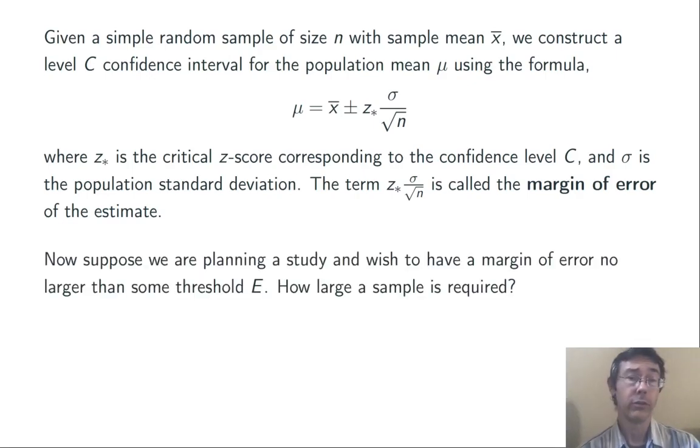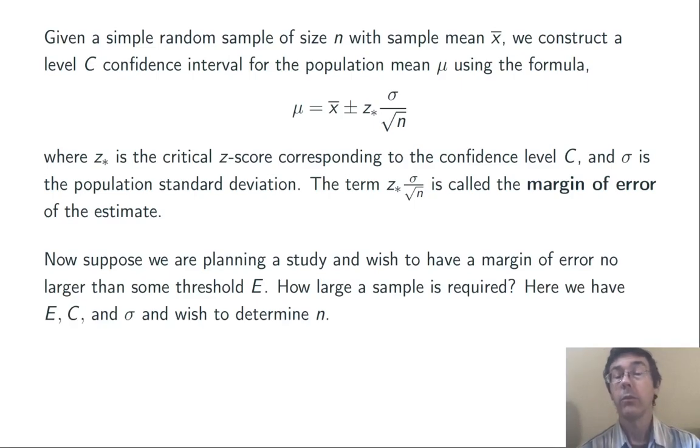Now, here's a natural question to ask. Suppose we're planning a study, and we need a margin of error to be no larger than some threshold, let's call it E. How large a sample do we need? So we're in a situation where we have E, the margin of error that's required, C, the level of confidence that we're specifying, and σ, the population standard deviation, which right now we're assuming is known. We need to find little n.